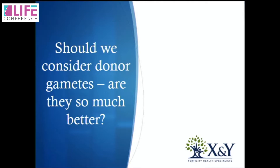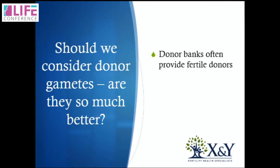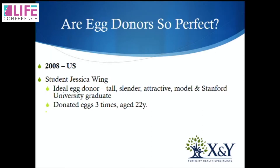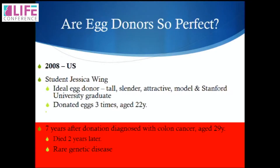Should we consider donor gametes if mum and dad can't bring good gametes to the party? Donor banks often provide fertile donors so we know they can provide healthy babies, but the genetic screen on those donors is always going to be limited. For example, in 2008 in the US, a lady called Jessica Wing — an ideal egg donor, tall, slender, attractive, a model as a teenager who got a degree from Stanford — donated three times at age 22. Seven years later, at age 29, she was found to have colon cancer and died two years later from a rare genetic disease. That bank then had to go to the babies' parents and say sorry, the eggs we gave you weren't genetically perfect.